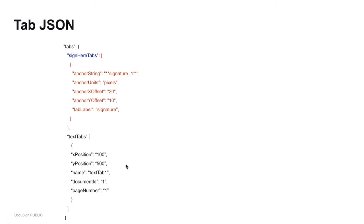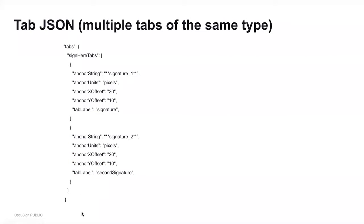Here we're highlighting the list of sign here tabs — if you wanted another sign here tab, it would be part of this list. The same applies to text tabs. If you had a third type of tab, you'd just add it underneath. Here's an example of what it looks like when you have multiple tabs of the same type: we have two sign here tabs, and we've given them a tab label property to distinguish between them — 'signature' and 'second signature' — both part of the one list of sign here tabs.